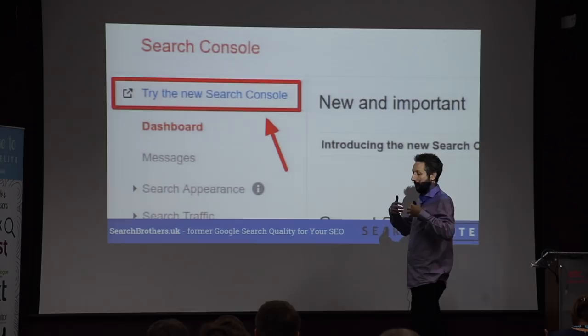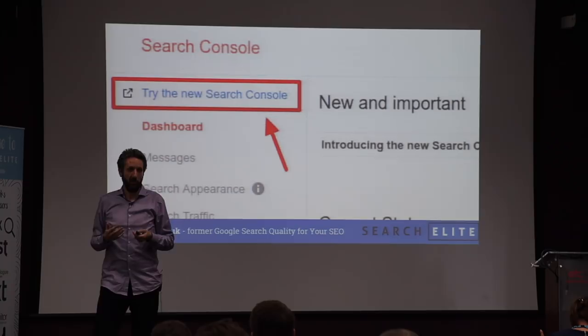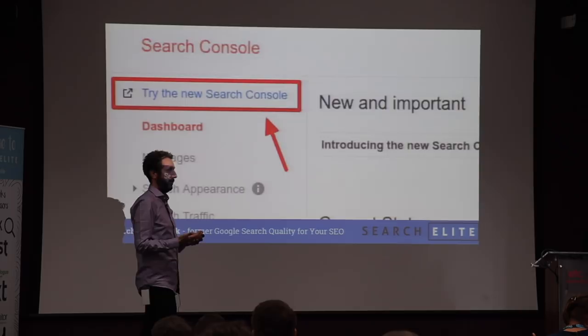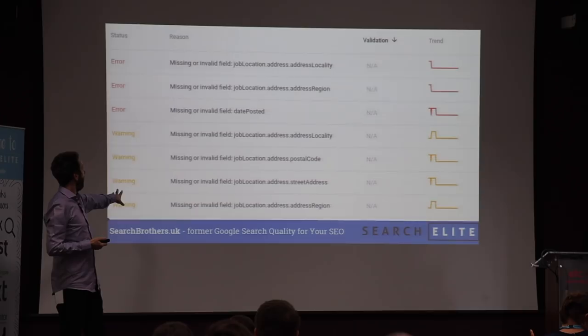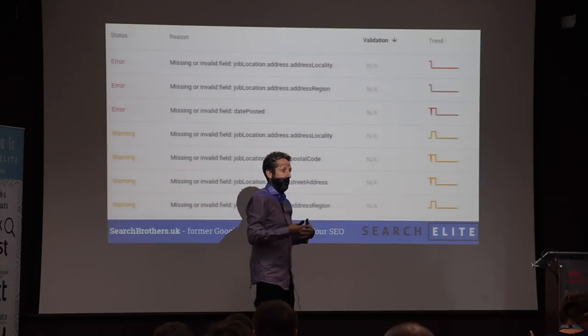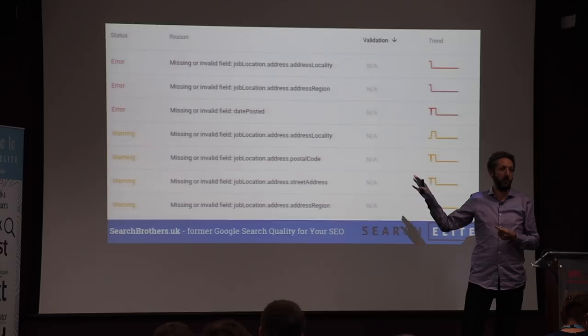Job posting is also interesting from another perspective. With the new Google Search Console interface, we can see how Google is changing its perspective on presenting us with structured data information — we can now see more detailed information of when they solve specific issues. We get emails about that now, and on top of that we can see it in a more detailed interface. Keep an eye on the job posting one because that's probably going to be kind of like the template for all the other schemas in the near future.